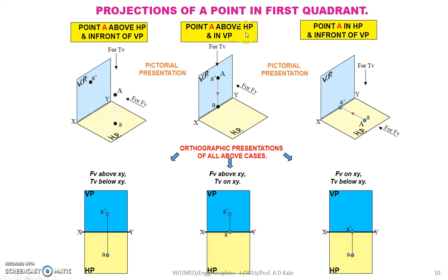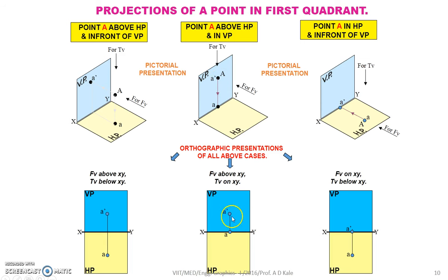If point A is above HP but lies on VP, see this particular pictorial view. The projection of point A for this condition will be shown as follows: draw the XY line. The space above is the vertical plane and the space below is the horizontal plane. Because A is on VP, the locus of A-dash will be marked first — how far it is above HP. And if you see it from the top view, the projection of the top view of point A will lie on the XY line.